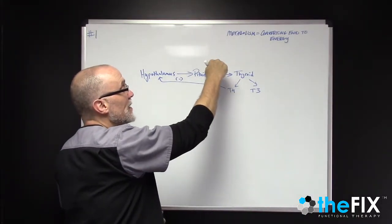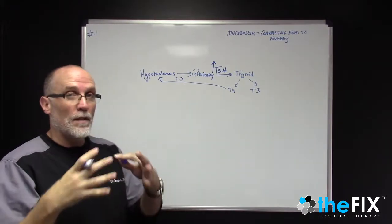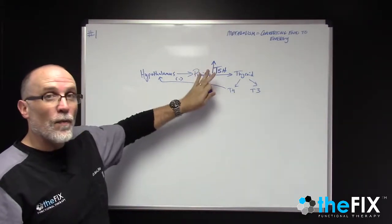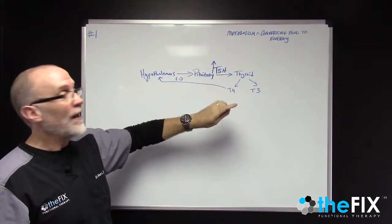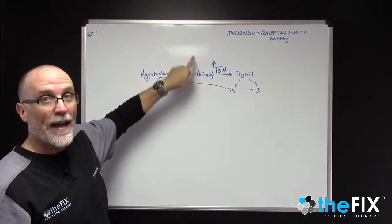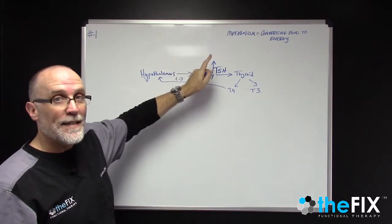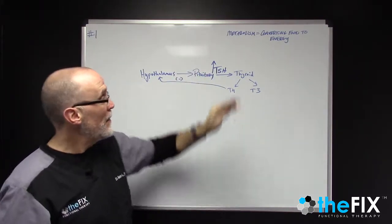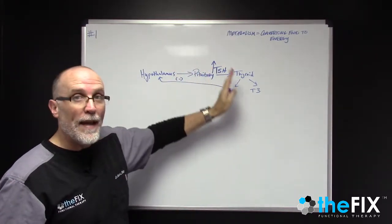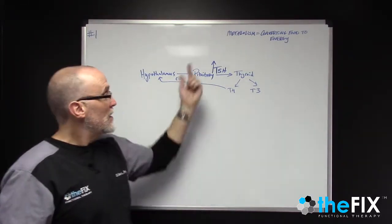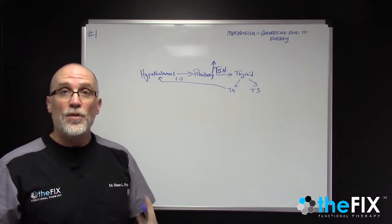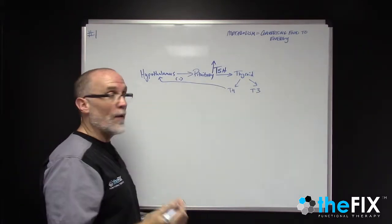So elevated TSH, based on a lab value above a certain range, would indicate that you have hypothyroidism. There are other things that indicate that as well, but one of them and the main one they look at is elevated TSH. So high TSH means low thyroid because that means that your body's trying to constantly make more of the thyroid hormones. So you go to the doc, you see this elevated TSH, the doc puts you on Synthroid or levothyroxine.